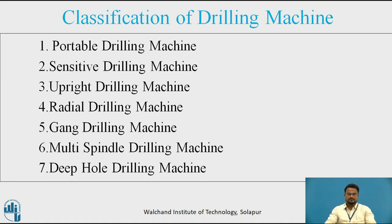Coming to the upright drilling machine. This is similar to a sensitive drilling machine in construction but with additional features. This machine is larger in size and stronger than a sensitive drilling machine. It has a power feeding mechanism and drive for varying spindle speed to suit various requirements. This machine is used for drilling small and medium sized holes. Based on the type of column used, this machine can be sub-classified as round column or pillar type, and box column.